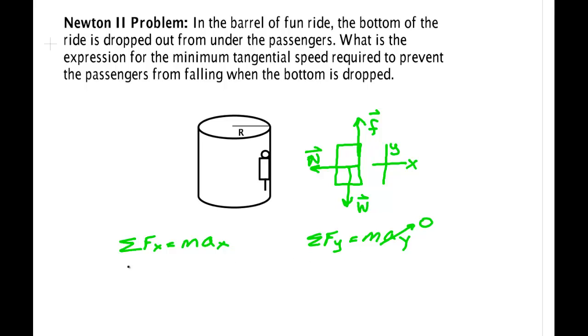We have the normal force pointing inward. That's minus N. This is equal to the mass. For the acceleration, the acceleration along x is along the radius. This is the centripetal acceleration. V squared over r. And it points inward. And inward is in the negative x direction. So it gets a minus sign.